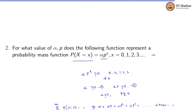For this to hold, p must be less than 1, because only then does this infinite series converge. This follows from the geometric progression formula: the sum equals a divided by (1 minus r), where a = alpha and r = p, giving alpha divided by (1 minus p) equals 1.